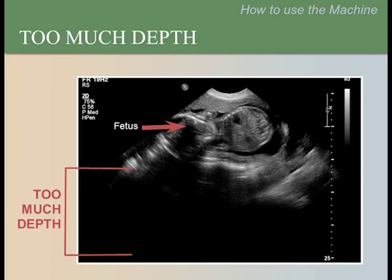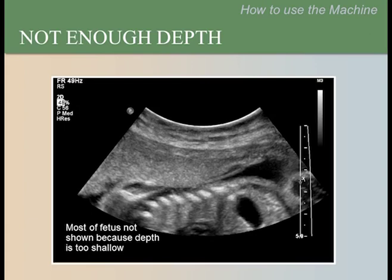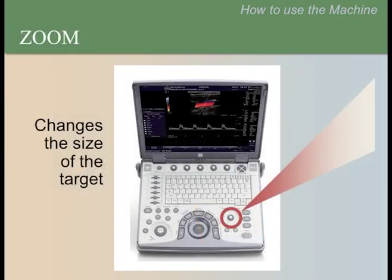Make sure the entire structure you want to examine is included in the image. Please notice the placenta, fetal spine, and fetal stomach in this image. Even though the target is in the center of the image, sometimes it is too small to see well. We can use the zoom controls to increase the size of our target. The zoom controls are usually near the depth controls — please locate the zoom control on your own ultrasound machine.